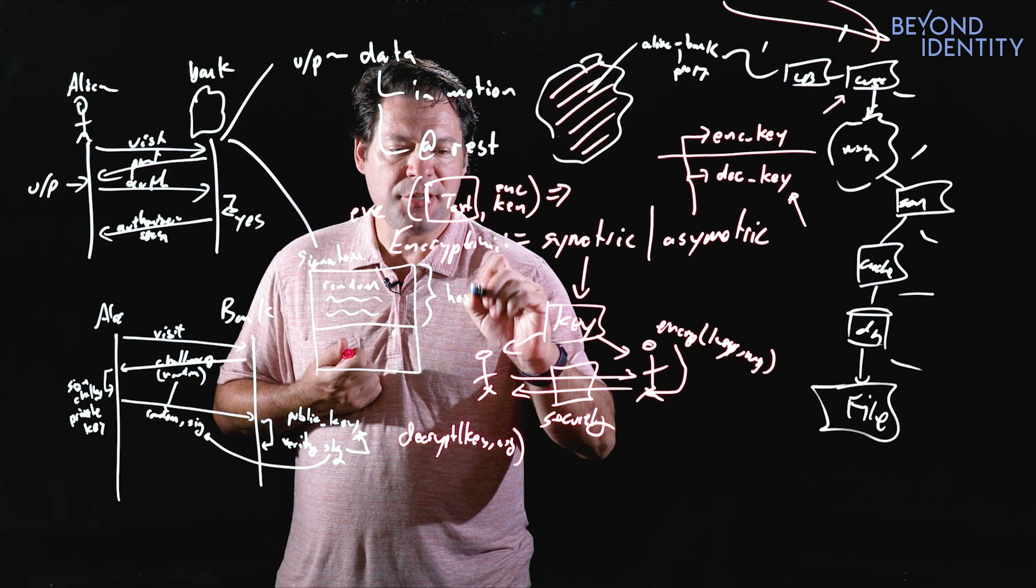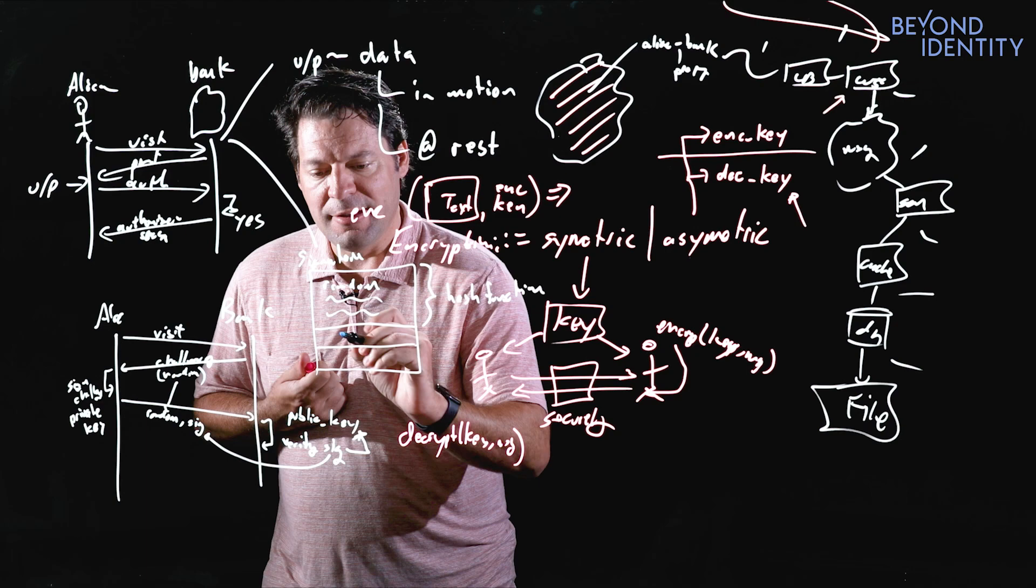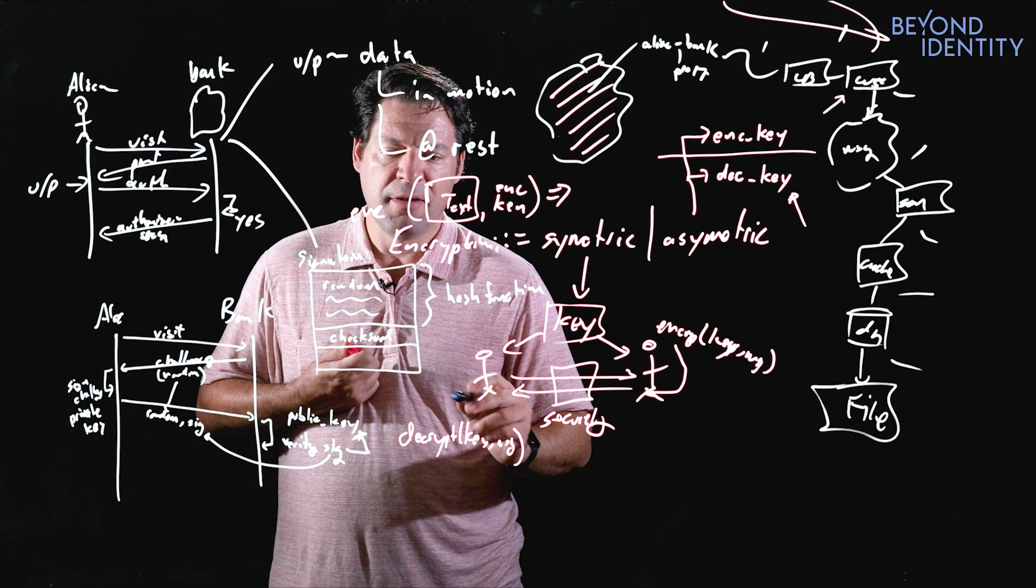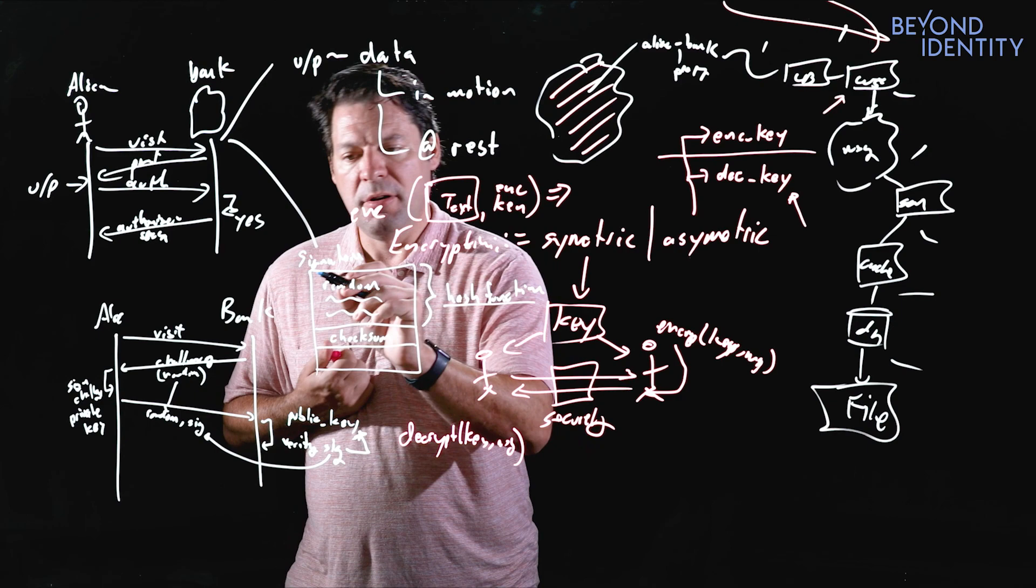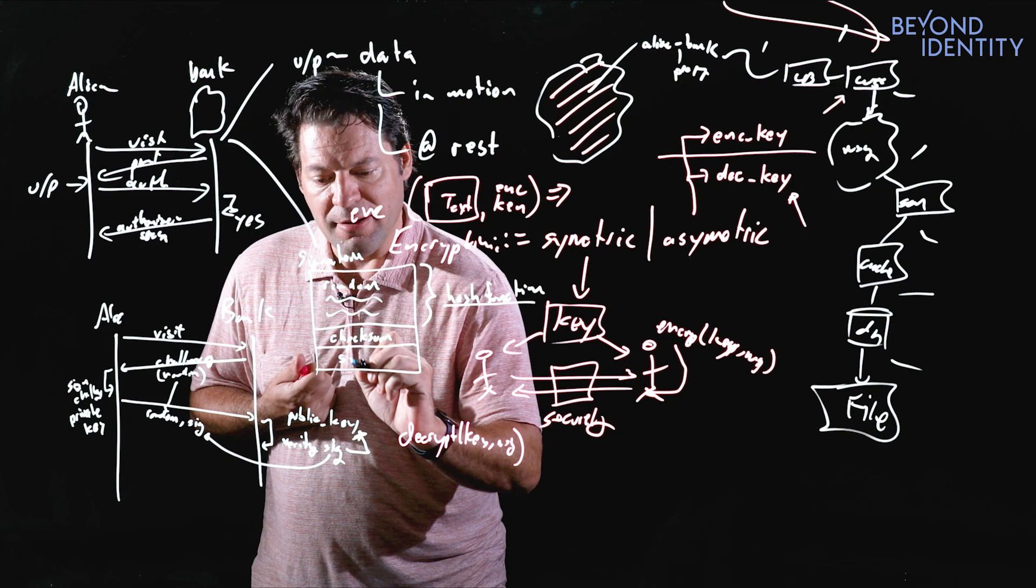I shrink it down with a hash function—remember, a hash function is a one-way function. When I hash this, I produce what's called a checksum—a fixed-length value that is unique to this hash function over all of this input. Now I produce an encrypted version of that checksum using my private key, and that's the signature.